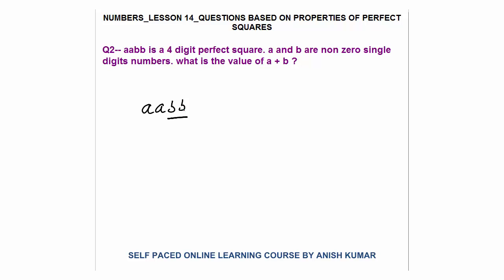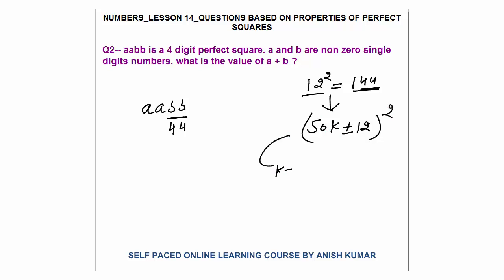Looking at squares from 1 to 25, many have equal last two digits but those are zeros. Since a and b are non-zero, we need non-zero repeated last two digits. In 12 squared = 144, the last two digits are 44 — both same and non-zero. This is the only such case in squares 1 to 25. So the last two digits must be 44.